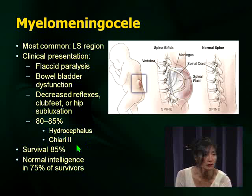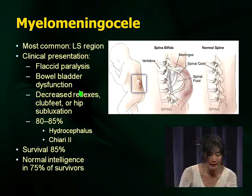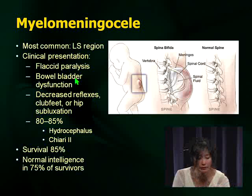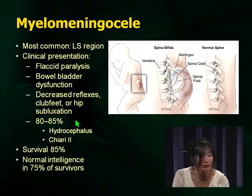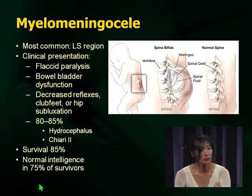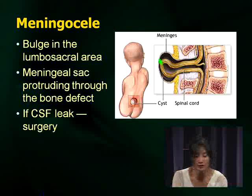What are kids with spina bifida going to look like? Remember that the reflexes are decreased, not increased. Because it's a congenital abnormality with exposure of the spinal cord and roots, you are going to have club feet and hip subluxation. Survival is very high. Remember also that intelligence is normal in the majority of survivors — it's just a mechanical problem. Meningocele, on the other hand, is much less common. The only difference is that all that's protruding is the meninges through the bony defect.